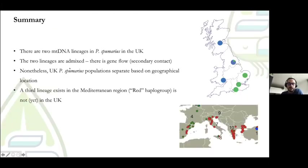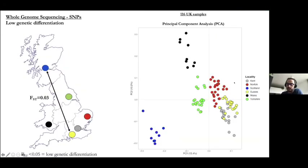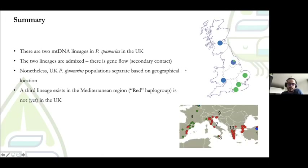To summarize, we have two different mitochondrial lineages in the UK: the blue in the north and west, and the green in the south and southeast of England. These two lineages seem to be mixing now, so they are probably not isolated anymore. Even though there is low genetic differentiation, the populations are still separated based on geographic location. And notably, we didn't find any insects belonging to the red lineage that is common in southern Europe.